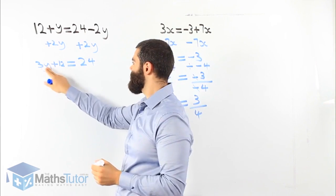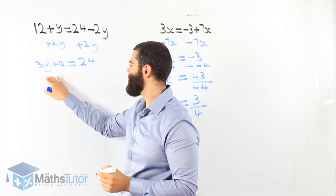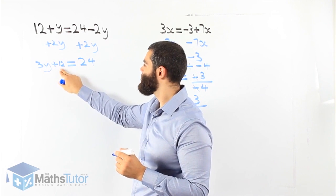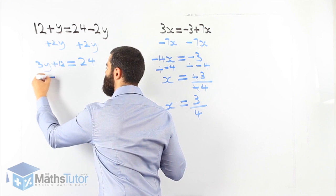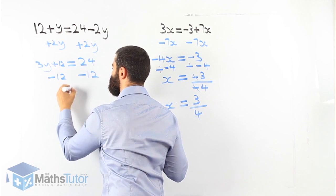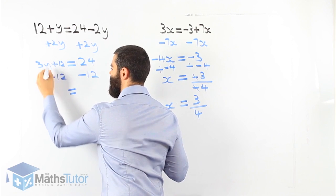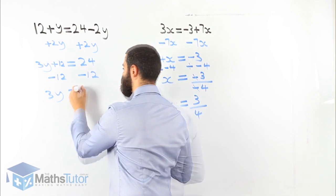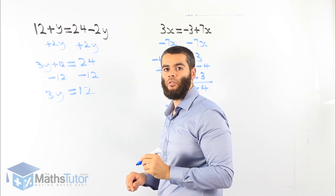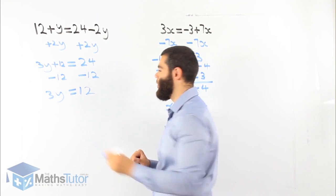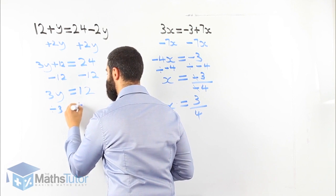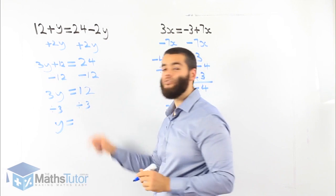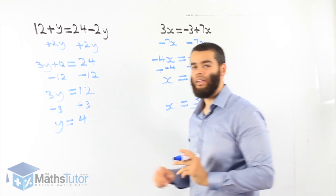Now we have 3y plus 12 equals 24. We want to leave y by itself, so we start with the furthest number from y — the positive 12. Minus 12 on one side, minus 12 on the other. 12 minus 12 is gone, and 24 take away 12 leaves 3y equals 12. Now we divide by 3 on both sides. 3 divided by 3, we're left with 1y. And 12 divided by 3 is 4. y equals 4.